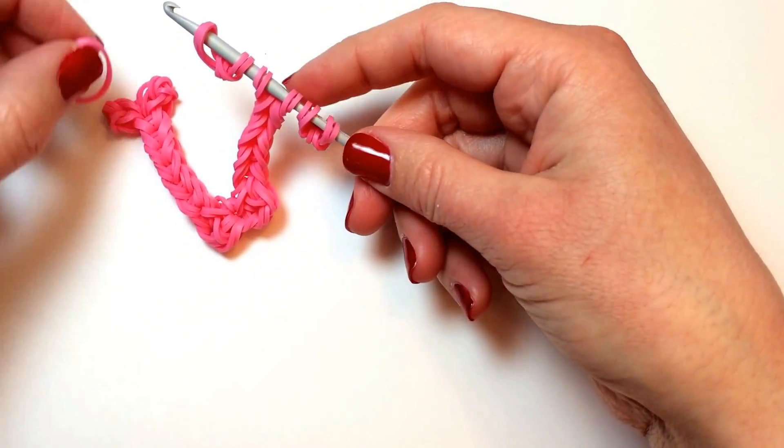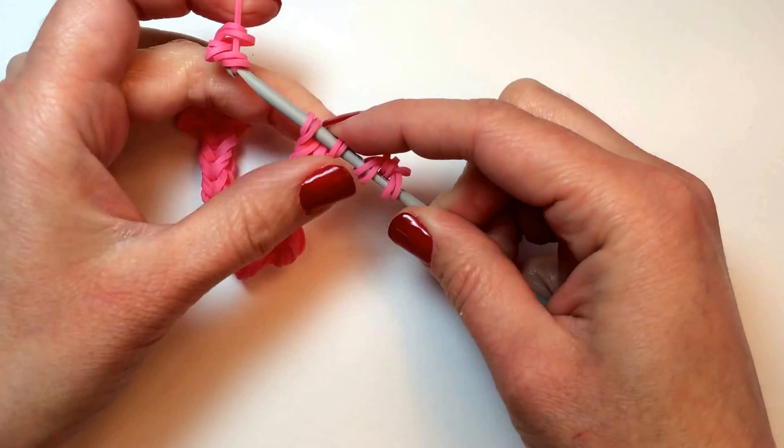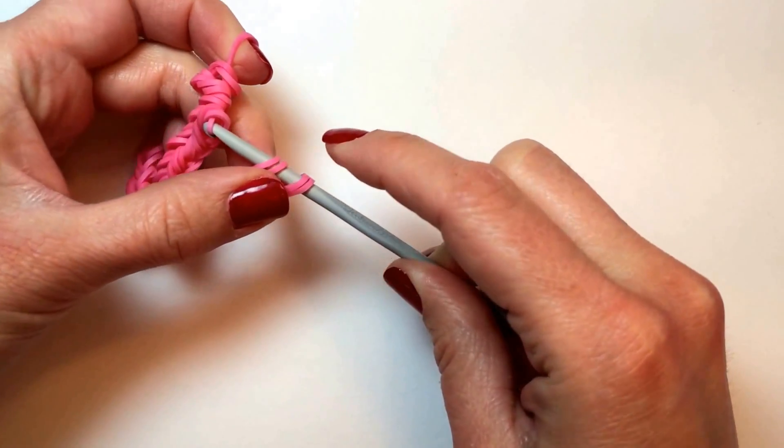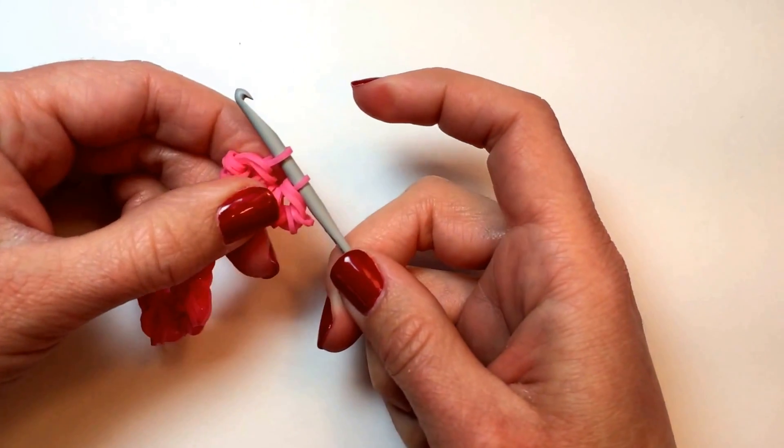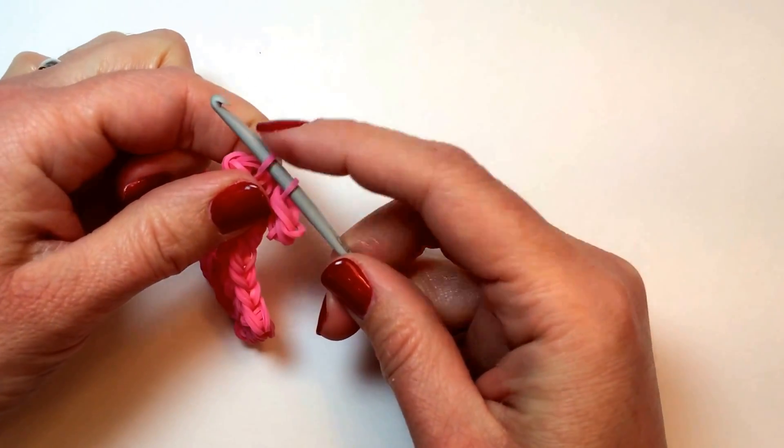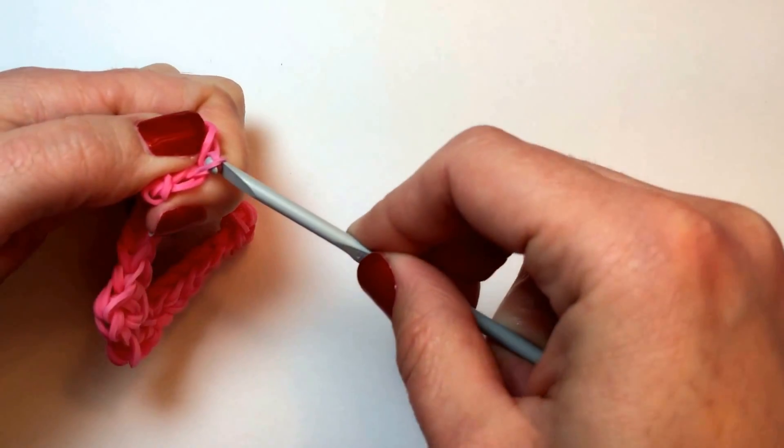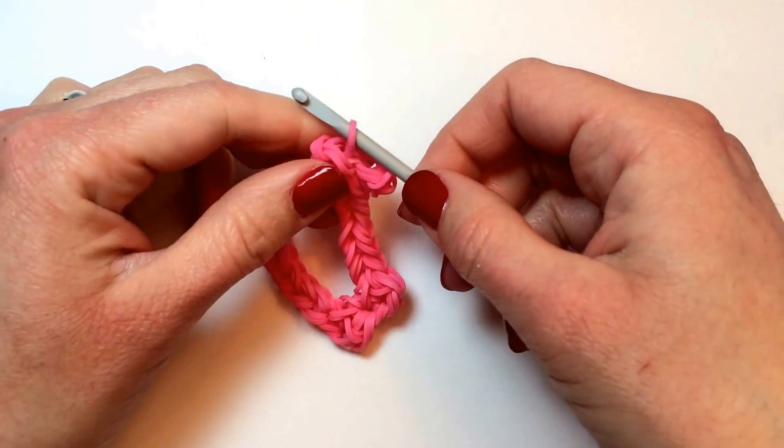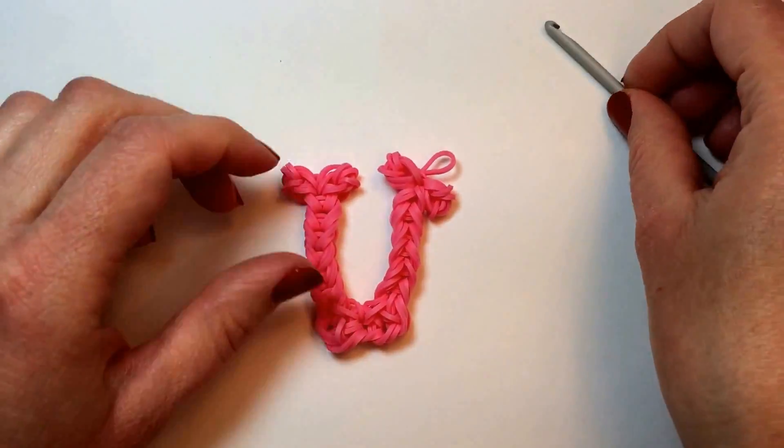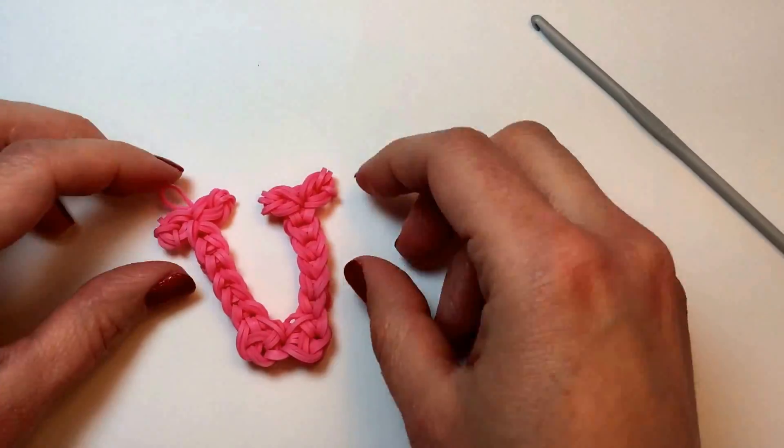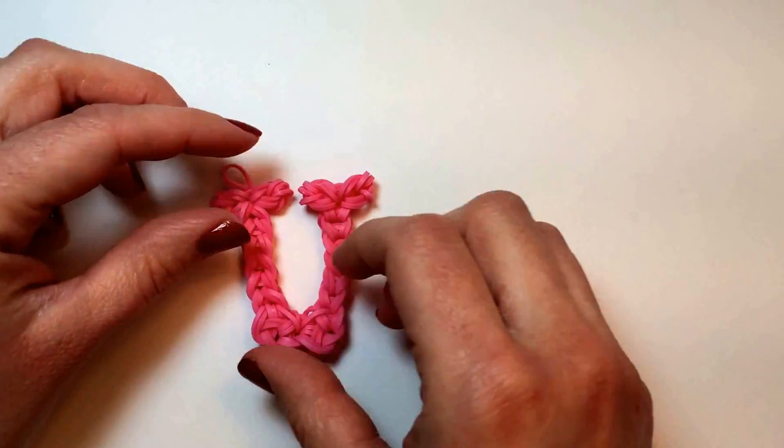And we're going to take a single rubber band and slide all of these pieces onto it: one, two, and three. And then take both sides of our rubber band onto the hook like this. We're going to pull this side through the center of that side to create a slip knot, and there you have it. Your very own letter U charm that you made using just a hook and rainbow loom bands.